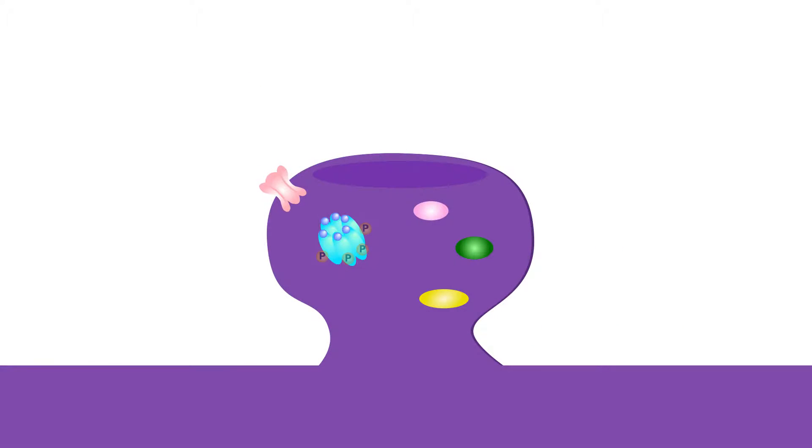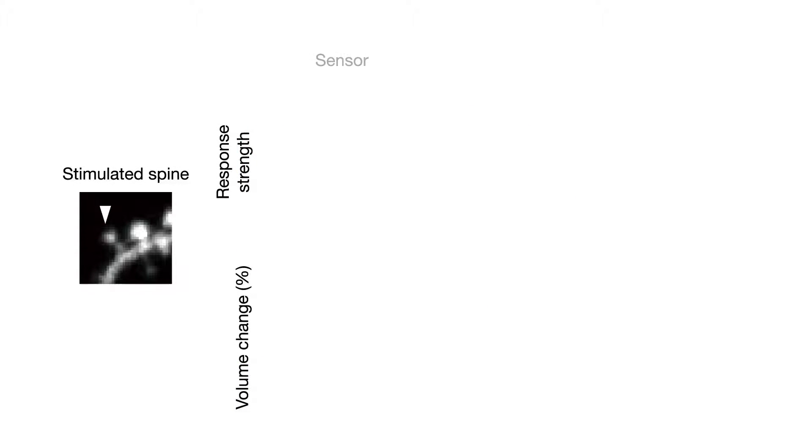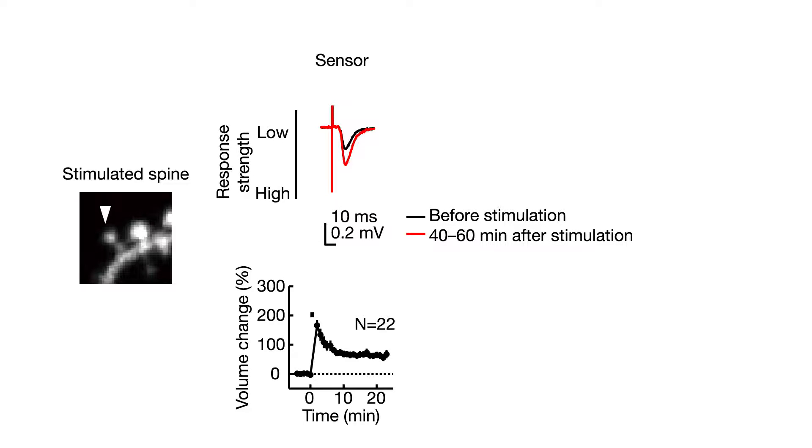They first investigated the timing of CAMK2 activity required for spines to grow and synapses to get stronger. Normally, stimulating a synapse with a particular rhythm strengthens it and makes spines grow. But if the researchers shined the blue light while stimulating, thus turning off CAMK2 activity at the same time, those changes didn't happen.